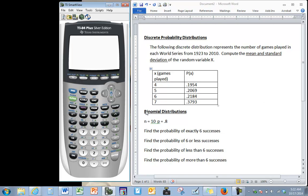Next, for binomial distributions we have n equals 10, that's our total number of trials. P is our probability of success. So we want to find the probability of exactly six successes. We're going to use the binomial pdf function.